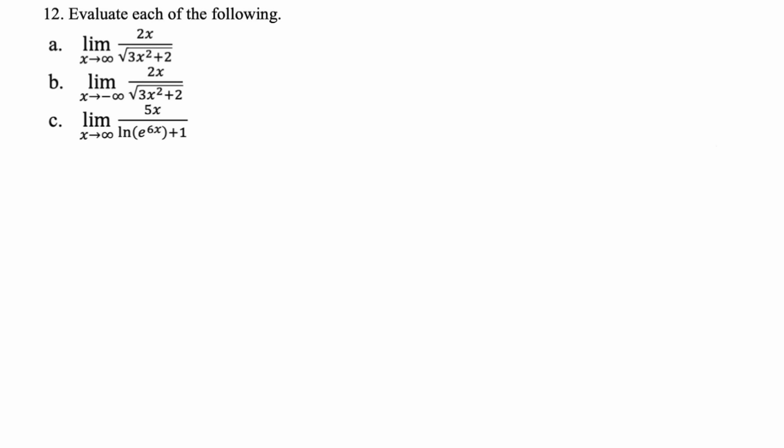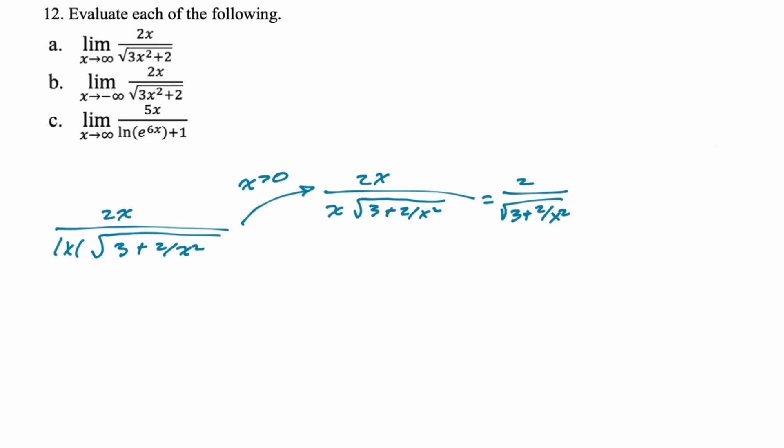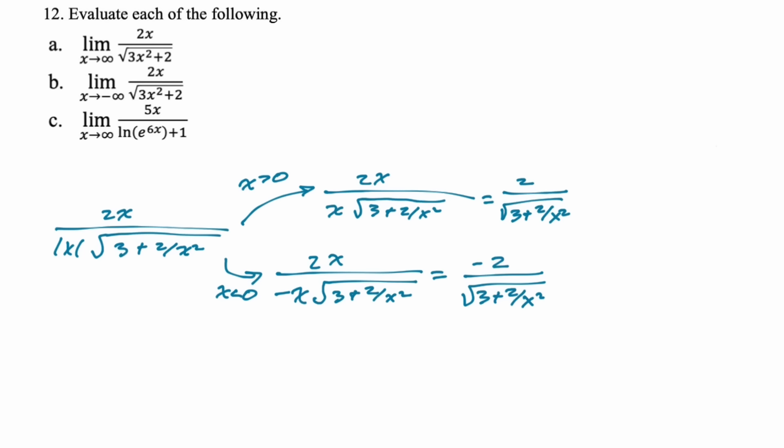Limits to infinity are still tripping people up. For the radical expression, factor x² out of the radical in the denominator so √(x²) = |x|. When x > 0, replace |x| with x and cancel — you get 2/√3. When x < 0, replace |x| with -x and cancel — you get -2/√3. So the limit as x → +∞ is 2/√3, and as x → -∞ is -2/√3. Two different horizontal asymptotes.